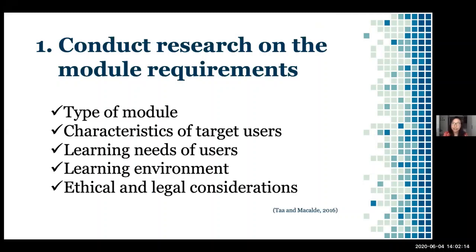The first step is to conduct research on module requirements. When I say research, this is not referring to a full-blown research paper, but rather it is grounded on evidence. For example, in the university when we did the reframing for the new normal, we conducted surveys, interviewed students, and asked faculty — that is part of evidence-based decision making. The first question we ask is: what type of module are we planning to make? At the back of our minds, we're constantly thinking that my students will learn even if I am not there.